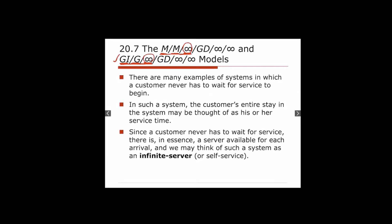In this scenario, the entire time a customer spends in the system is basically the time they spend receiving service. Since there is an infinite number of servers, the waiting time in the queue WQ is zero, and LQ — the number of customers waiting in the queue — is also zero. Therefore, W (total time in system) equals WQ plus WS, which simplifies to just WS.